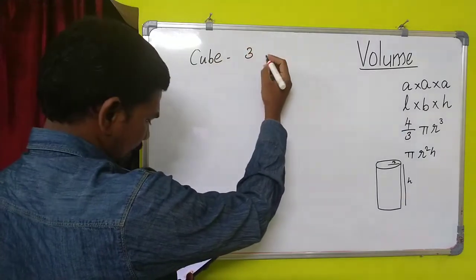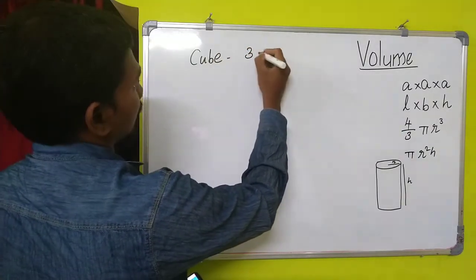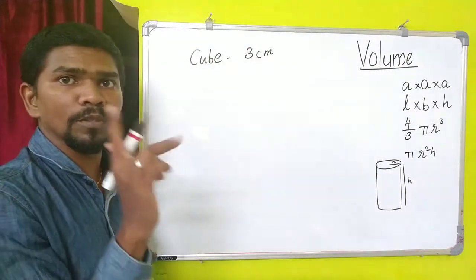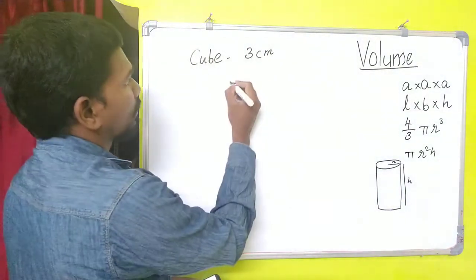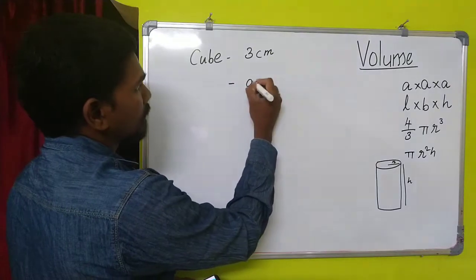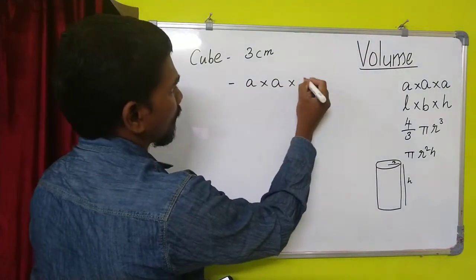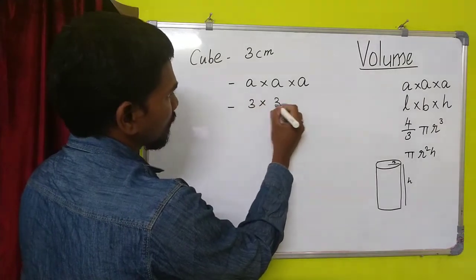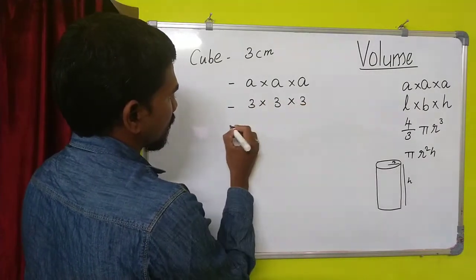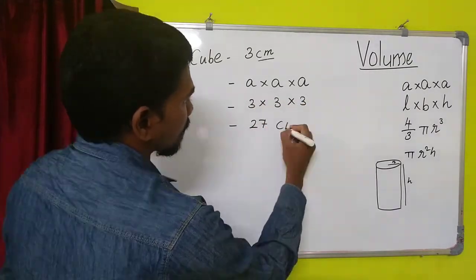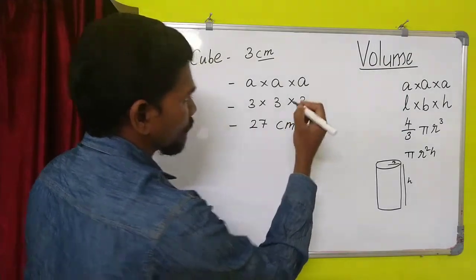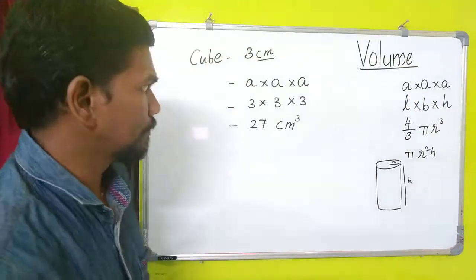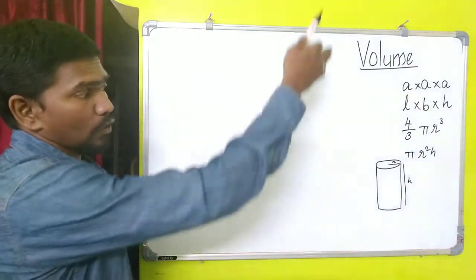First we are going to see the cube problem. Its side is 3 centimeters. For a cube, one side is enough. The formula is a × a × a, that implies 3 × 3 × 3, which is equal to 27 centimeters cube. So that is the volume of the cube.